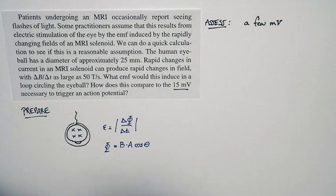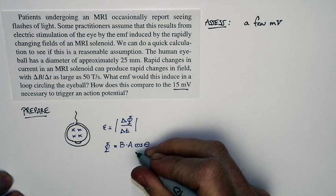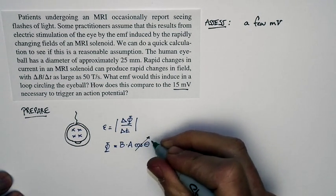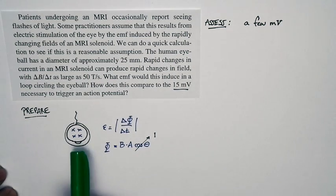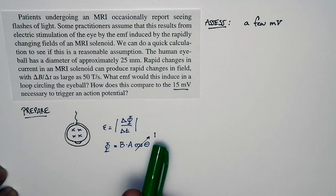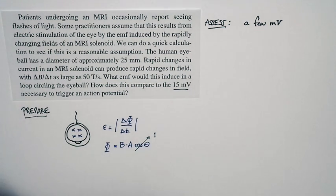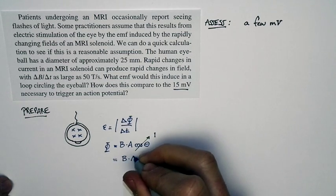And the flux is B times A times the cosine of theta. But if we want to consider a situation where we have the largest possible flux change, we can just take theta equal to zero degrees. And so cosine of theta is just equal to one. And in fact, that's the situation that we've drawn right here. And since the eyeball is a sphere, you can always pick a circle where theta is going to be zero degrees, and this is going to be equal to one. And that's going to give us the biggest possible EMF. So the flux just reduces to B times A.